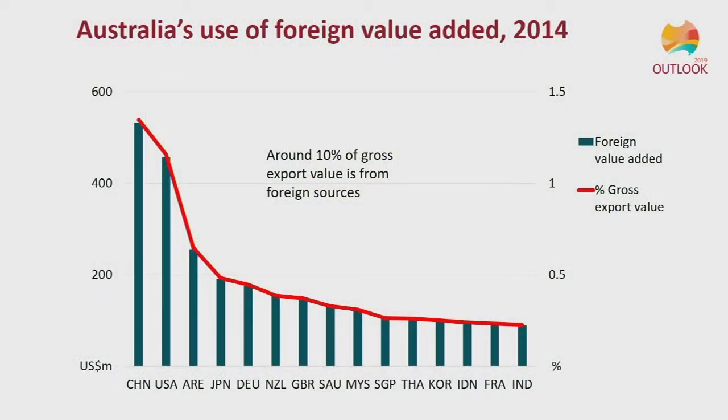China is our largest supplier and supplies around 1.4% of our gross value of agriculture and food exports. The US, Japan and Europe are also important. The UAE is important in terms of fuel and energy inputs. The other important linkage is New Zealand, which is really dominated by linkages to our dairy sector — New Zealand imports enable our exports of dairy products. So without New Zealand imports, we wouldn't be able to export as well as we do.